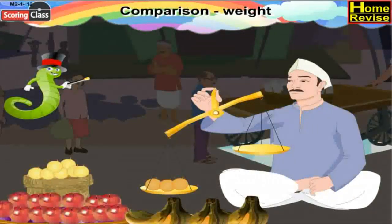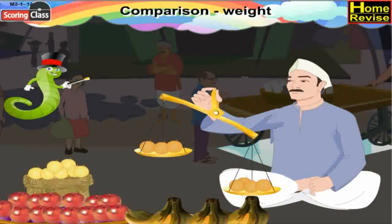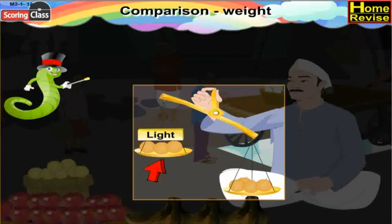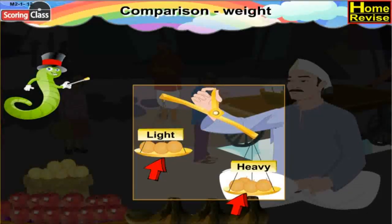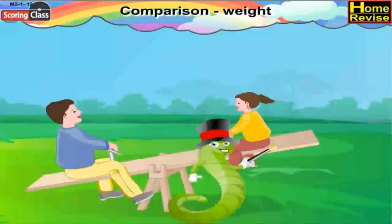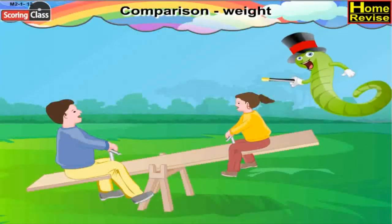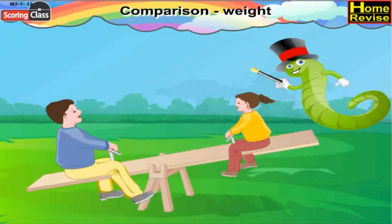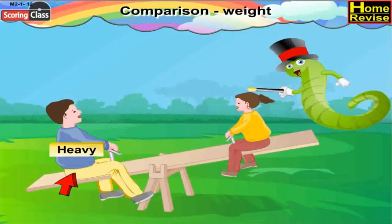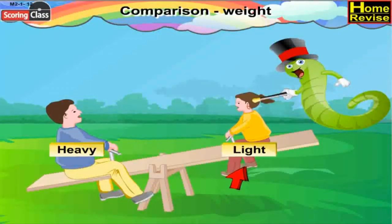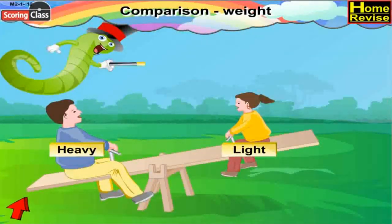Here is a man holding a balance. He has fruits in both pans of the balance. The left pan is light as it has fewer fruits, and the right pan is heavy as it has more fruits. In the second picture, two kids are playing on a seesaw. The kid sitting on the left side of the seesaw is heavy, and the kid sitting on the right side is light — that is why he is in the air and the kid on the left is touching the ground.